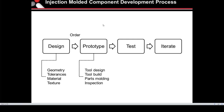Next is the prototype phase. Other than 3D printing, moving into a prototype mold, you're going to have your tool design, tool build, and parts being molded and inspected. Once the parts ship, you take your prototype parts, do your own inspections and testing, and then make any iterations or engineering changes, or move into production with production tooling or use that prototype tool for production.